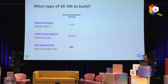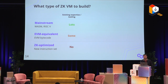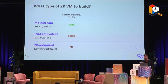The first property is existing expertise and tooling. For mainstream architectures like WebAssembly and RISC-V, there's a bunch of tooling — you can compile C, Rust, and other programs into these. For EVM equivalent bytecode, EVM is the standard in the blockchain space and there's quite a bit of expertise and tooling developed around EVM specifically. If you're building something new, obviously there's not much expertise or tooling available.